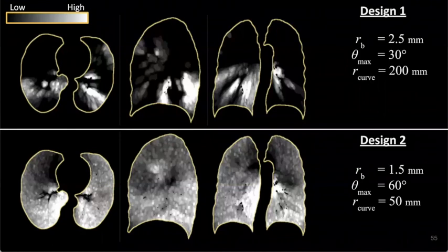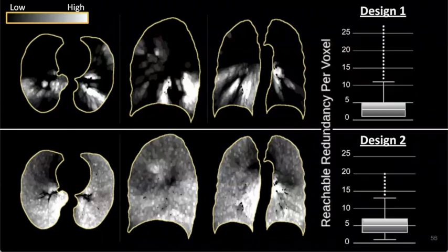We can then evaluate both of these designs using the reachable redundancy metric. And when we do so, we see that the most capable design shown in the bottom has a higher average reachable redundancy score per voxel in the image space. However, the most constrained device shown on top has a higher maximum redundancy count of 27, in large part because it inherently explores less of the workspace and therefore repeatedly reaches the same confined regions.